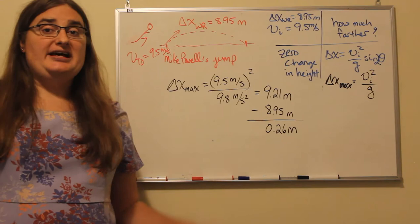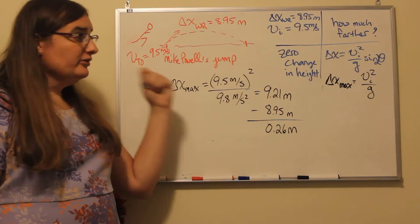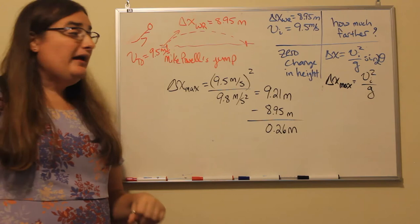For the long jump, we start on the ground, we land on the ground, so it's a zero change in height problem. And if we want to evaluate the maximum possible distance, we can use the range equation.